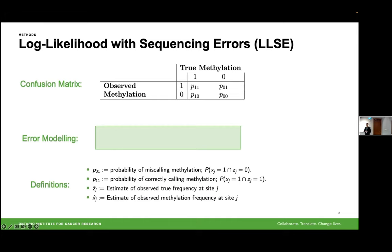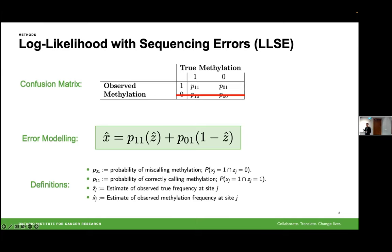We found that nanopore has an error rate of about 5%; however, this error rate is asymmetric, giving us four different types of errors. We focus on the first row since we're modeling observed methylation. Basically, we take a combination of when we correctly call methylation and when we miscall methylation. For example, if the true methylation probability is 100% but your probability of correctly calling methylation is 0.95, then your estimated observed methylation would be 0.95. Using this, our model stays the same except our binomial success parameter becomes our prediction of the observed methylation.